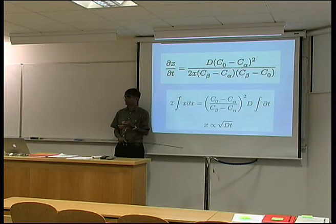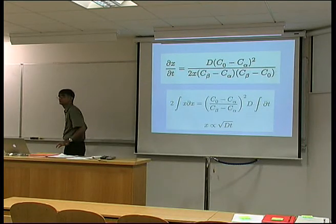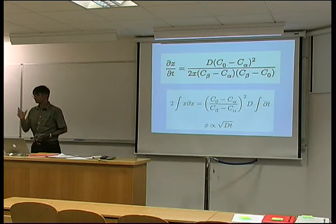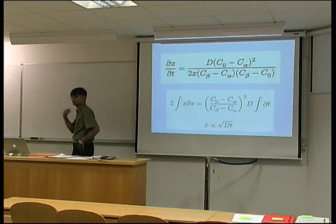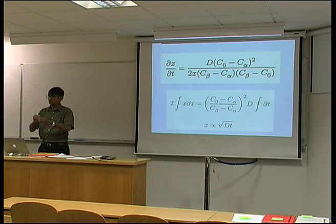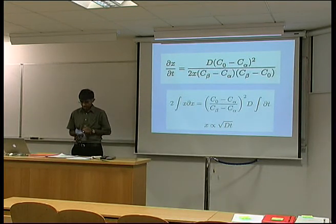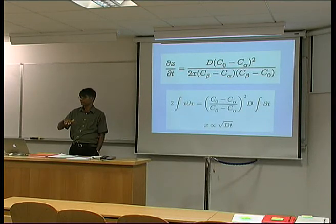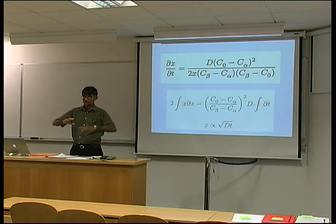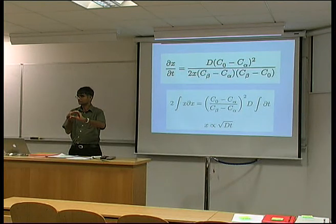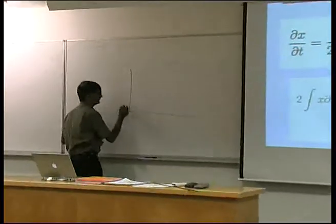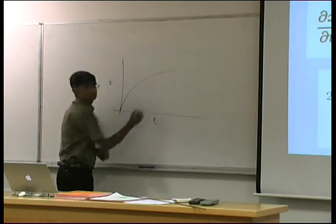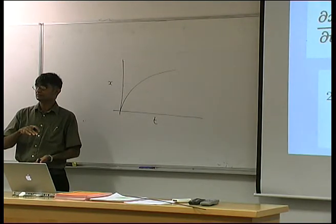We are considering one-dimensional growth — a flat interface moving. Two-dimensional growth would be a cylinder growing; three-dimensional would be a sphere growing. One-dimensional growth does happen — for example, the growth of a layer on another surface. If you look at ice forming on a pond, the ice thickens by the diffusion of heat through the ice. If I plot the thickness of the ice versus time, it would be a parabolic curve, so the growth rate slows down as the ice becomes thicker and thicker.